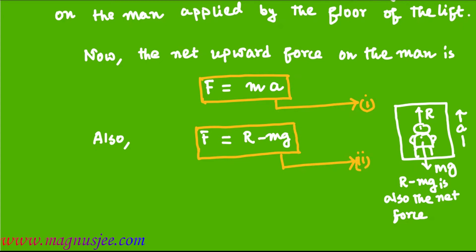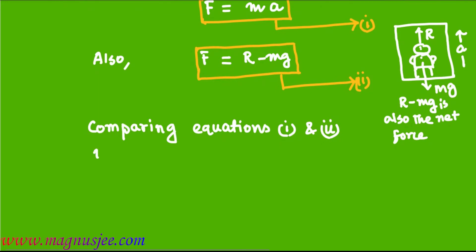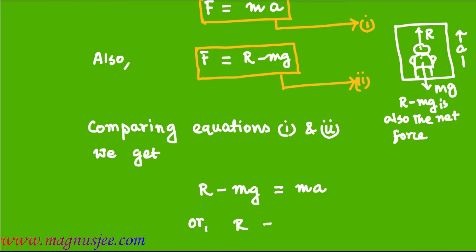Comparing equations 1 and 2, both represent the net upward force F. Comparing equations 1 and 2 we get R minus mg equal ma. Therefore R equals ma plus mg.